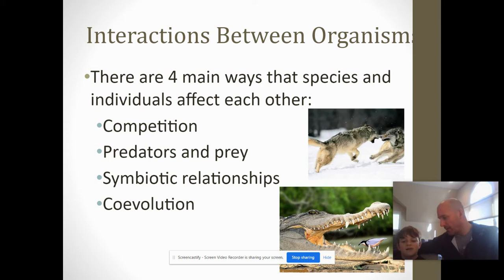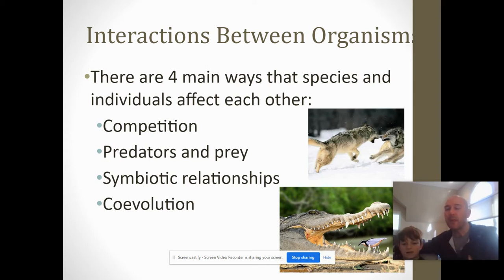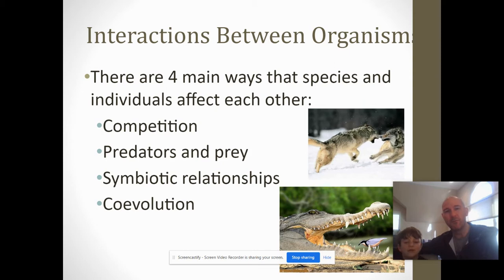Organisms — all different species living in the same area — is known as a community, or different populations living in the same area is known as a community. We focus on the interactions within those communities. There are four main ways that organisms or individuals affect each other.